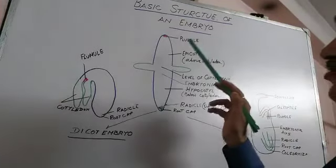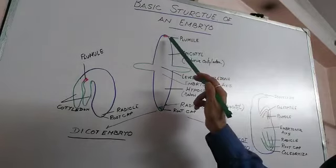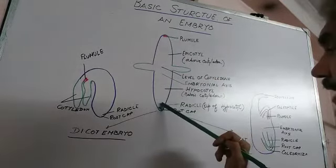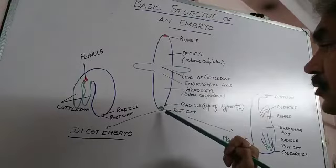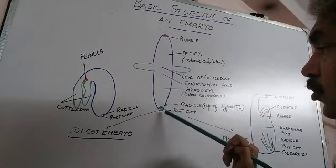This is the basic structure of an embryo. It comprises of plumule, which gives rise to shoot system. Radicle gives rise to the root system. Radicle is covered by root cap.